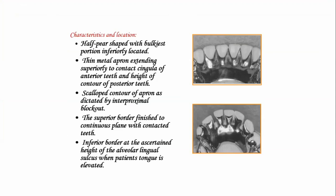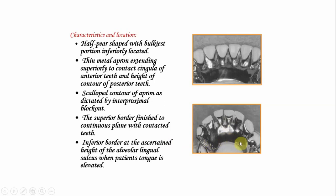The lingual plate location: it is half pear shaped with the bulkiest portion inferiorly, but less bulky than the lingual bar. A thin metal apron extends superiorly to contact the cingulum of anterior teeth and height of contour of posterior teeth, scalloped contour as dictated by interproximal block out, with the superior border finishing in a continuous plane with the contacted teeth. The superior margins of the scalloped metal should be knifed to avoid a ledging effect on the lingual surface of the teeth. In patients with open embrasures or widely separated anterior teeth, modification of the lingual plate may be indicated using a step-back design.